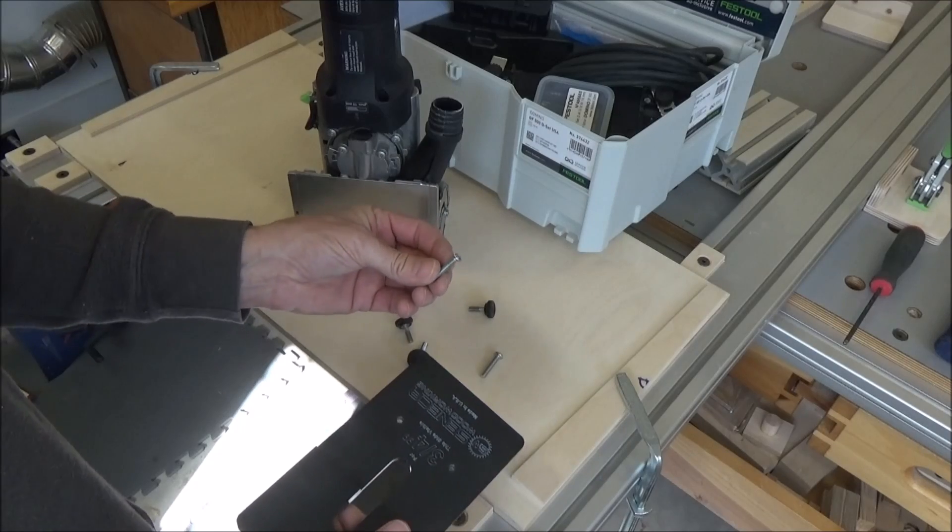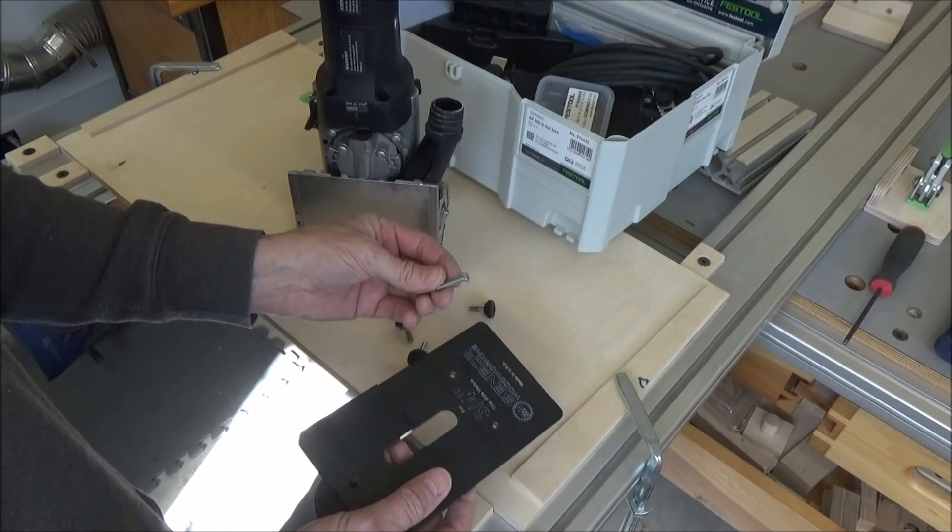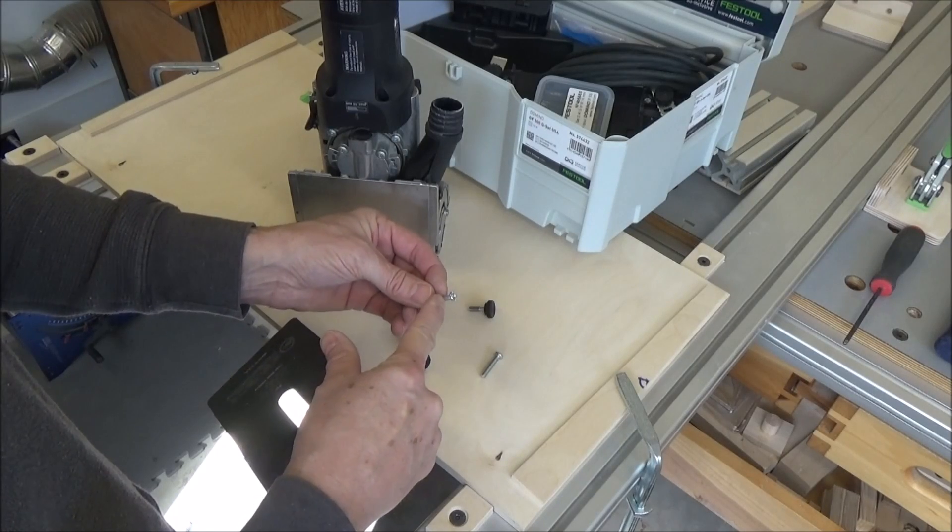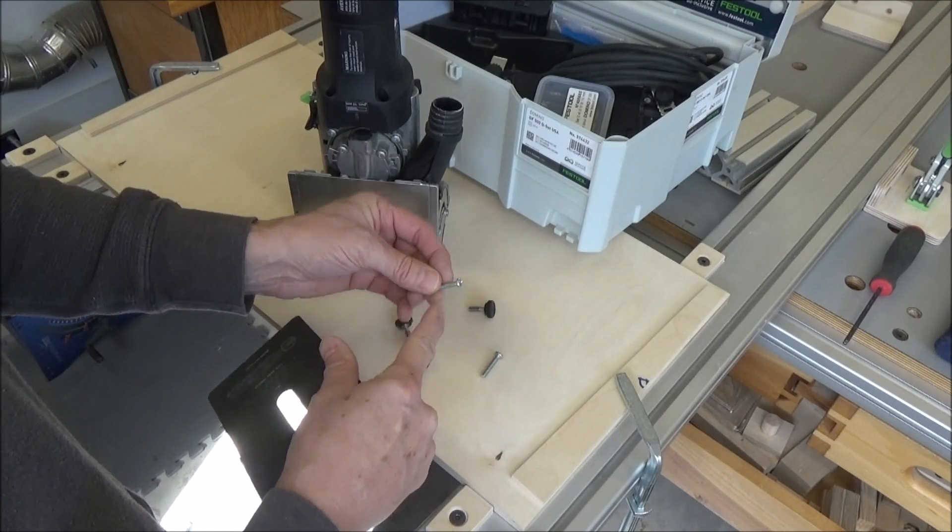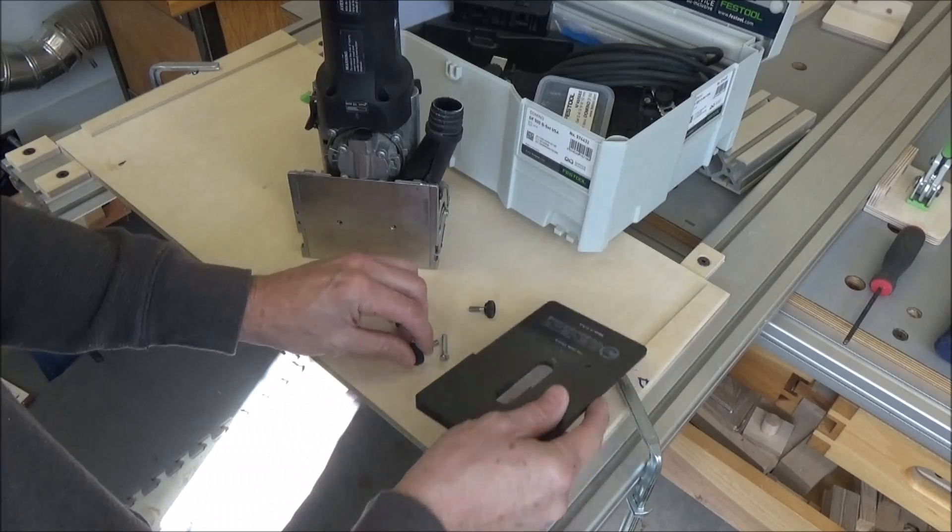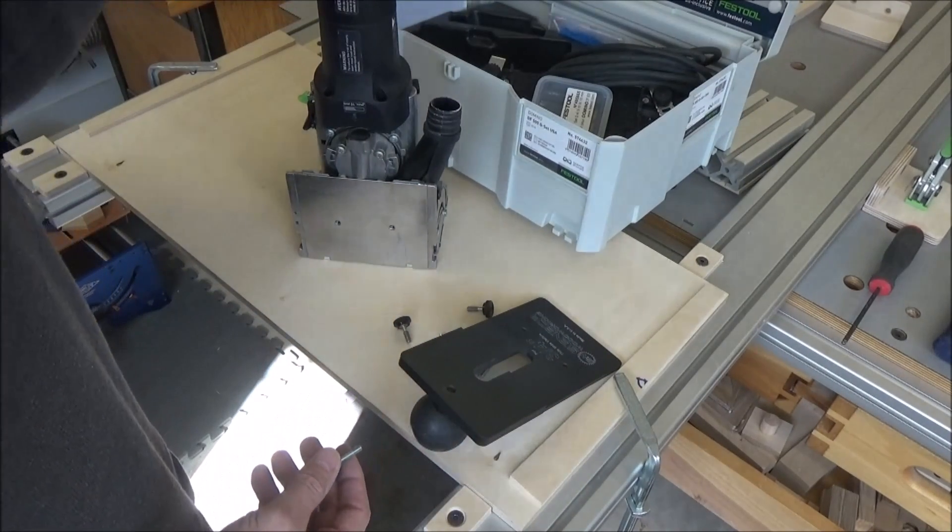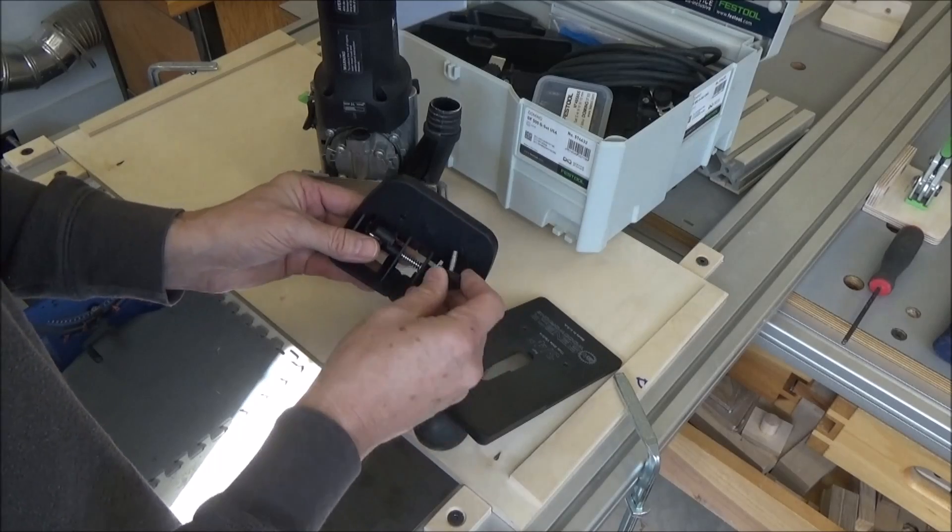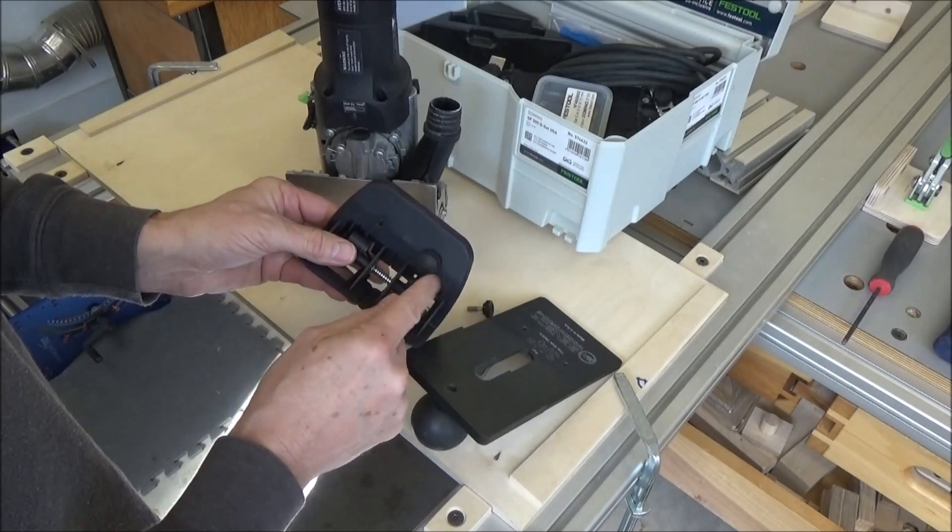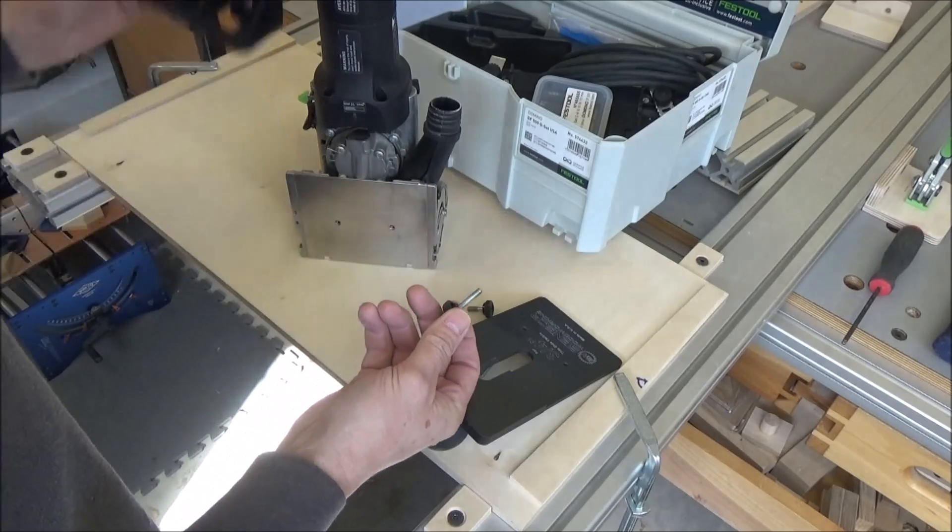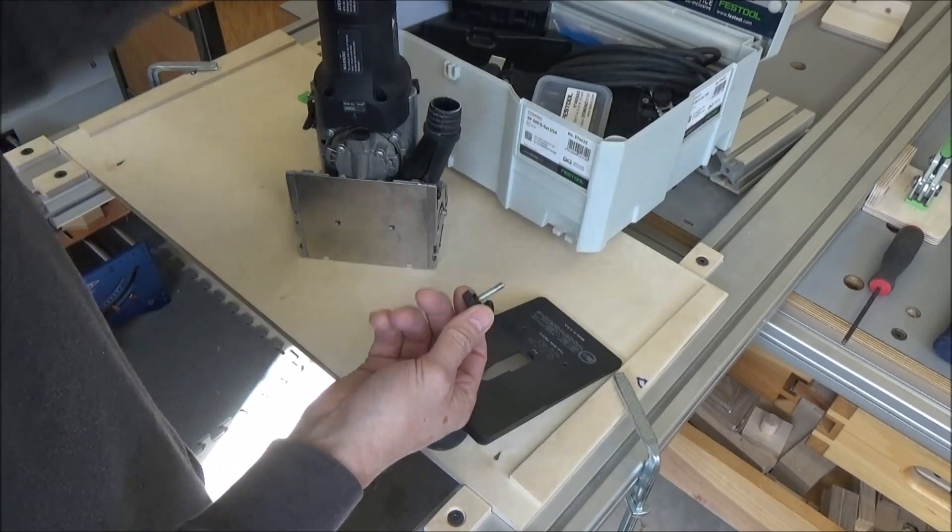So I was all prepared to take these screws that I had and remove the threads about a quarter of an inch from the head there, when I realized that the Domino comes with this accessory plate here that has a nice knob, you know, so it'd be tool-less. And I'm just going to modify this one here.